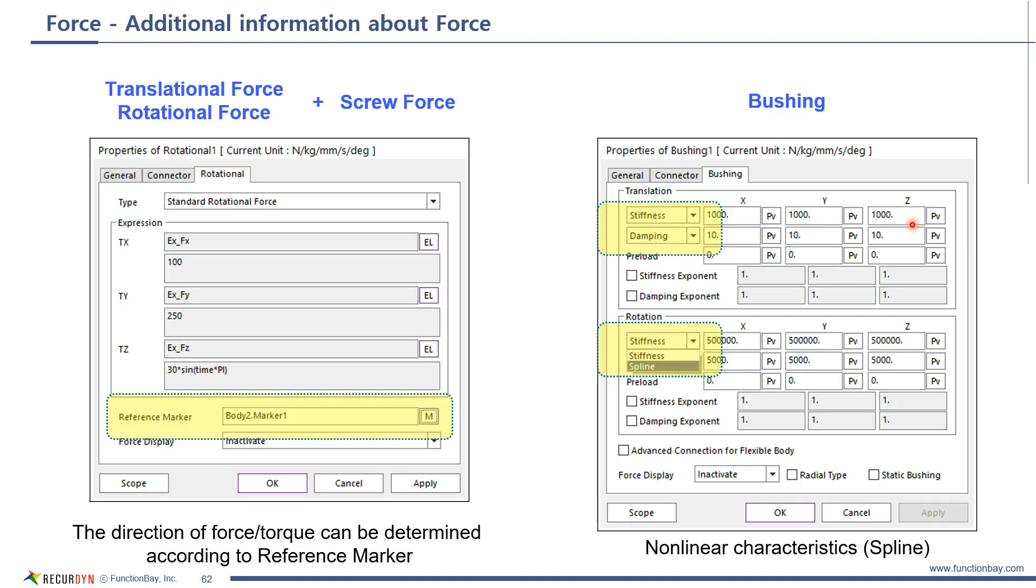I explained that translational force and rotational force can use reference marker. Also, screw force supports reference marker. The direction of the force and torque is determined by the orientation of the reference marker. Please note that bushing force supports non-linear characteristics as well.